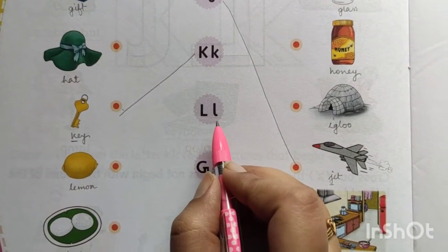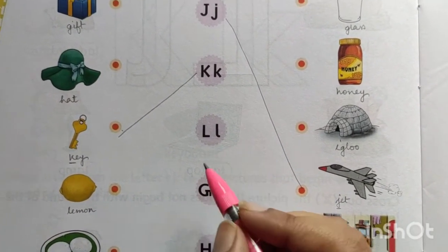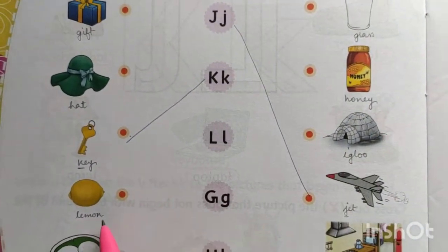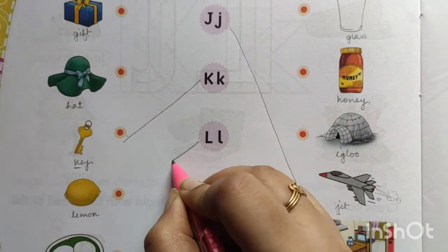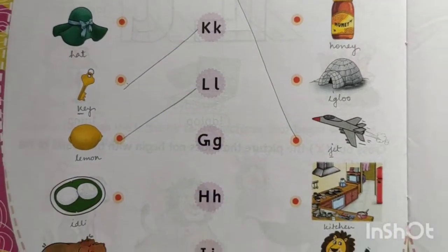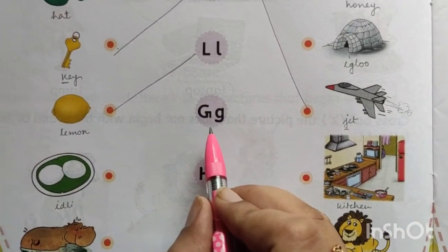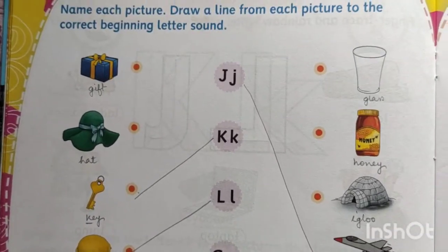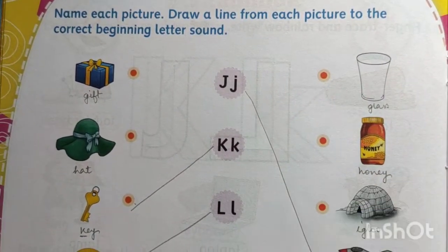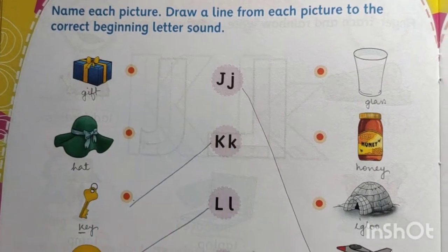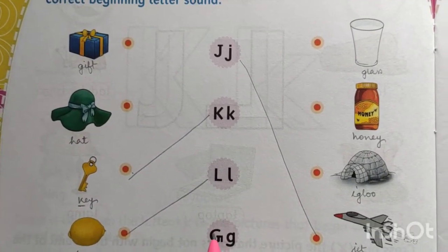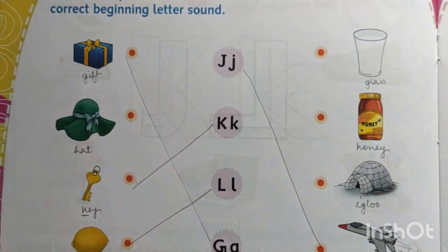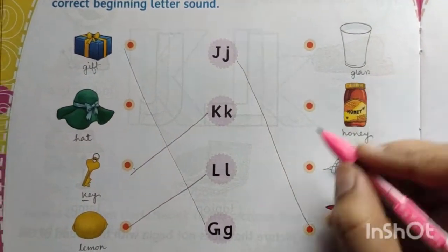Next is L — capital L and small l. Search for a picture starting with L. Yes, lemon. Next is G — capital G and small g. Here I can see gift — yes. So the line goes to G. And here also, glass starts with G.